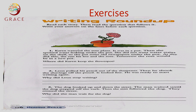Number one. Karen watered the rose plant. It was in a pot. Then she spotted water leaking under the pot. She did not want water stains on the shelf, so she put some old newspapers under the pot. As she did this, the sun hit her and the rose. Tomorrow the rose would be in a new pot.